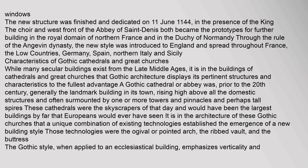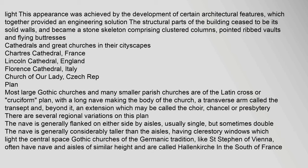A Gothic cathedral or abbey was, prior to the 20th century, generally the landmark building in its town, rising high above all the domestic structures and often surmounted by one or more towers and pinnacles and perhaps tall spires. These cathedrals were the skyscrapers of that day. The technologies that established this new building style were the ogival or pointed arch, the ribbed vault, and the buttress. The Gothic style, when applied to an ecclesiastical building, emphasizes verticality and light, achieved by the development of certain architectural features. The structural parts of the building ceased to be its solid walls and became a stone skeleton comprising clustered columns, pointed ribbed vaults and flying buttresses.